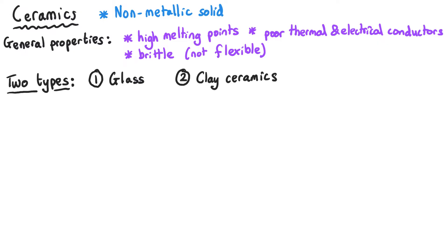There are two types of ceramics that you need to know about. You need to know about clay ceramics and glass. If we start with glass, glass in general has the obvious property of being transparent which means that we can see through it.